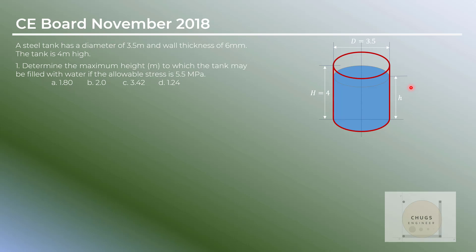For number one, we determine the maximum height to which the tank may be filled with water given the allowable stress of 5.5 megapascal. The formula for tangential stress is S = pd over 2t, which is pressure times diameter divided by twice the thickness. Since we have an allowable stress, our computed stress must be less than or equal to 5.5 — we cannot exceed this value.